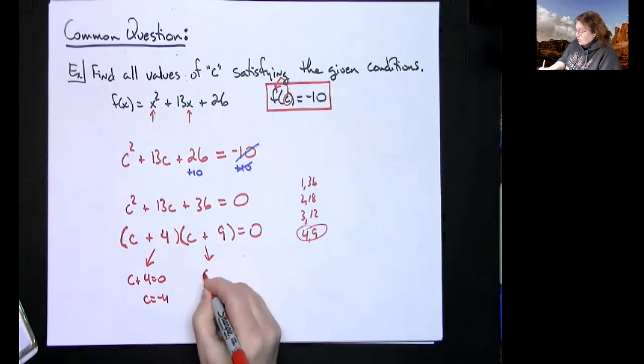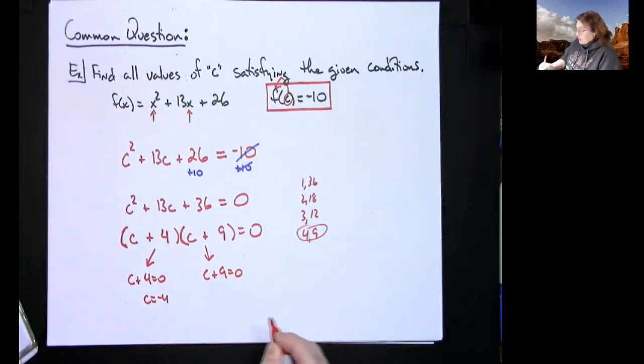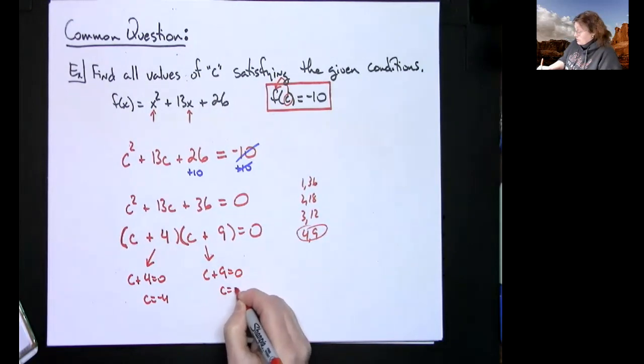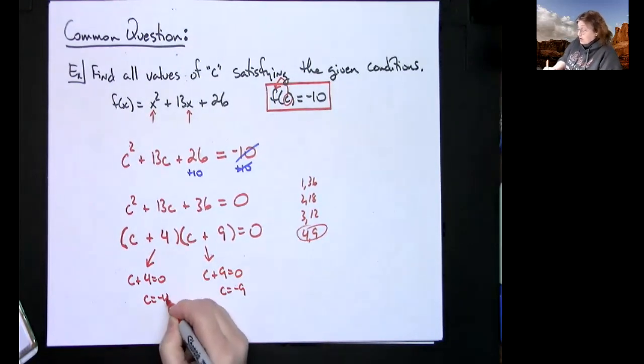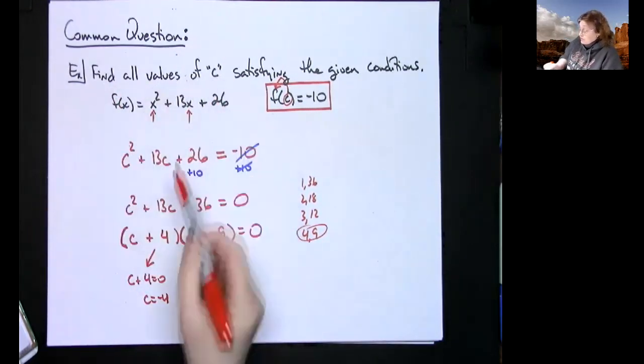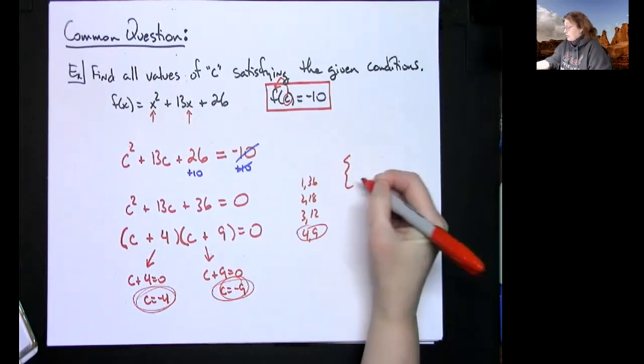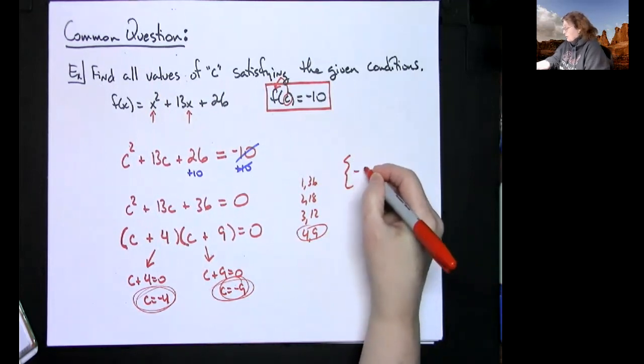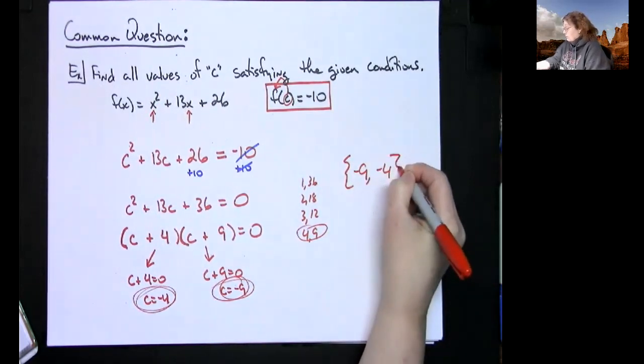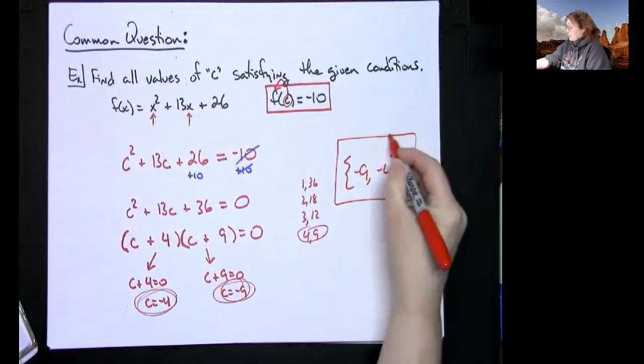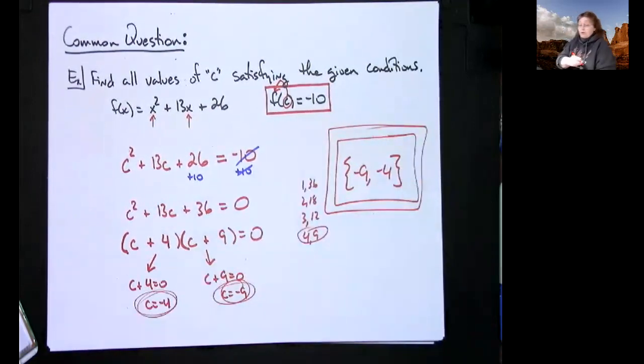It says find all values of c. Well, here's one value and here's another one, so I found multiple values of c: negative 9 and negative 4. So as a final answer, right there.